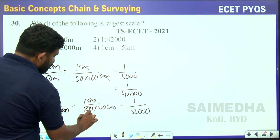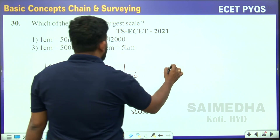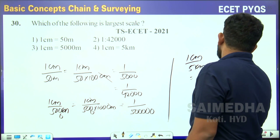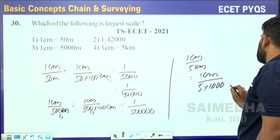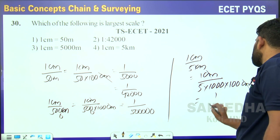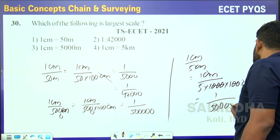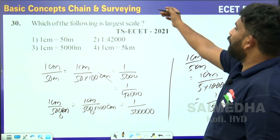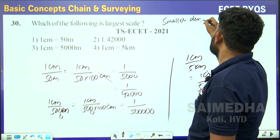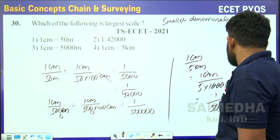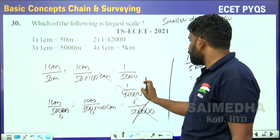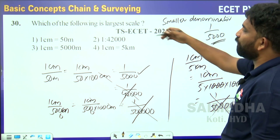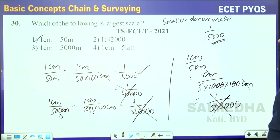1 cm per 5000 m adds one more zero. And 1 cm per 5 km: converting 5 km to cm gives 5 × 1000 × 100 = 1:500,000. A larger scale has a smaller denominator. The larger denominators like 1:50,000, 1:500,000 are not correct. The smallest denominator is 1:5000, which is 1 cm = 50 m. So 1:5000 is the largest scale.